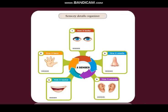Here is a sensory detail organizer. With the help of this, we can make our paragraph. We can choose words like how it looks, how it smells, how it sounds, how it tastes, and how it feels to fill this detail organizer.